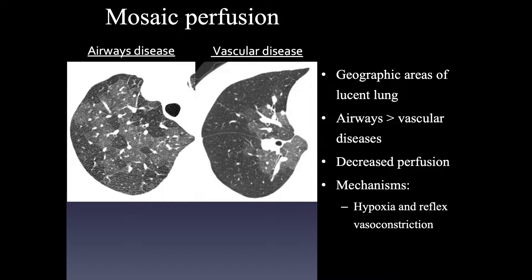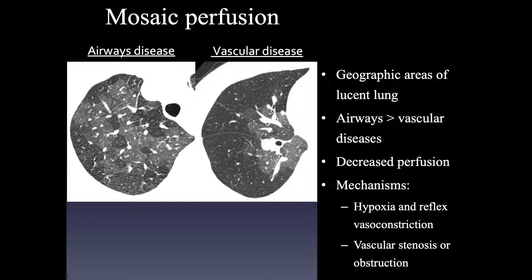In the case of airways disease, perfusion is decreased because of hypoxia and reflex vasoconstriction. In the case of vascular disease, it's reduced perfusion because of direct stenosis or occlusion of the vessels.